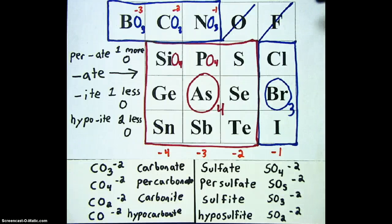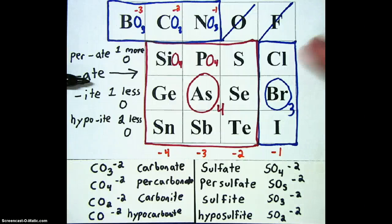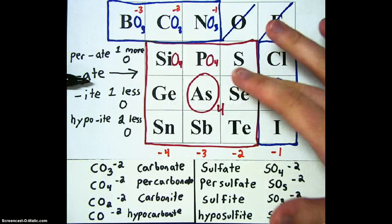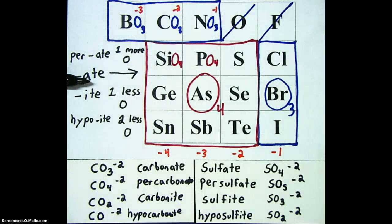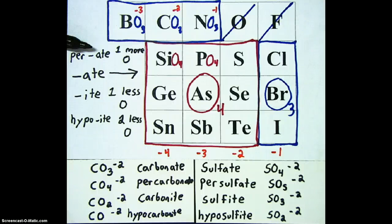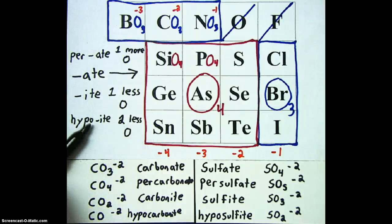To wrap everything up: everything originally drawn on our chart has the 'ate' ending — the middle block of nine has four oxygens and the top three and right three have three oxygens. One more oxygen than the chart gives the 'per-ate' form. One less oxygen gives the 'ite' ending with no prefix. Two less oxygens gives the 'hypo-ite' form. In all cases, the charge of the polyatomic ion stays the same as originally drawn on the chart. I hope that this is helpful to you.